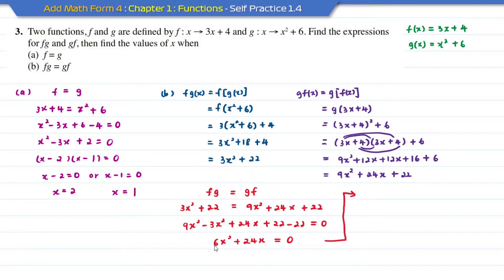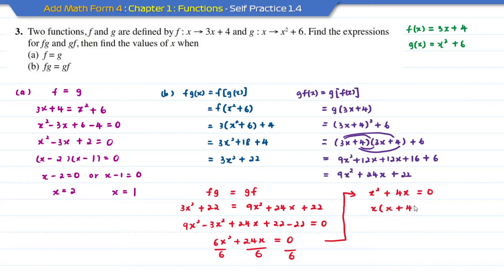I simplify by dividing each term by 6, giving x squared plus 4x equal to 0. Then I factorize using the common factor x: x(x plus 4) equal to 0. This means x equal to 0 or x plus 4 equal to 0. Moving plus 4 to the other side gives x equal to negative 4. So the solutions for part b are x equal to 0 or x equal to negative 4.